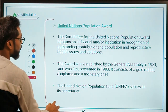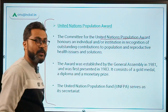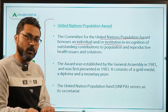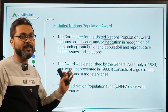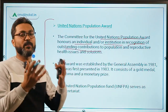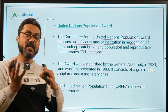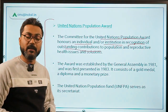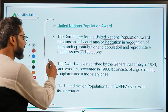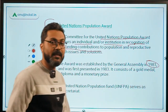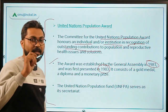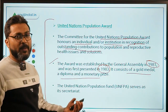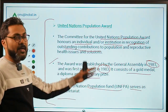Every year a committee for the United Nations Population Award honors an individual and/or an institution in recognition of outstanding contributions to population and reproductive health issues. The award was established in 1981 by the United Nations General Assembly, and for the very first time it was given in 1983. It consists of a gold medal, diploma, and a monetary prize. The United Nations Population Fund serves as the Secretariat of the United Nations Population Award.